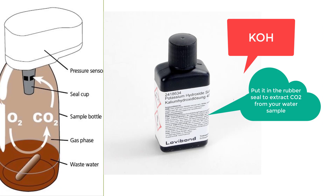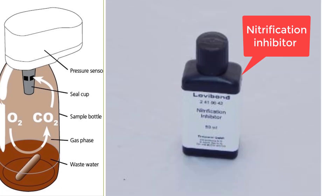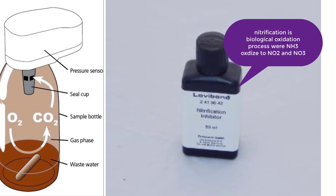This is potassium hydroxide — we put it in the rubber seal to extract the carbon dioxide from our water sample. This is a nitrification inhibitor. The word 'inhibitor' means to stop, and what we want to stop is the nitrification process, where ammonia is oxidized to nitrate and nitrite. Otherwise, oxygen will be consumed by this process instead of by the bacteria.